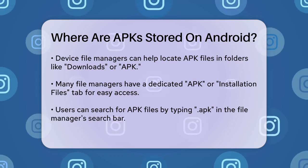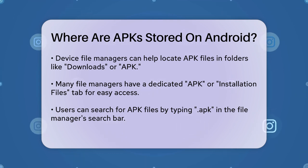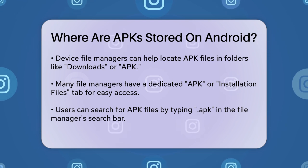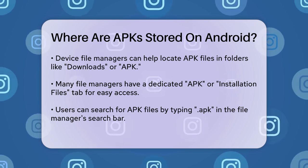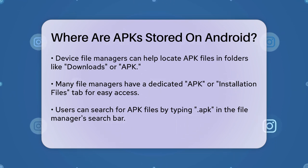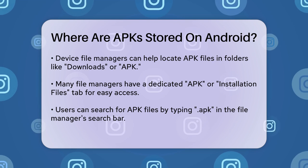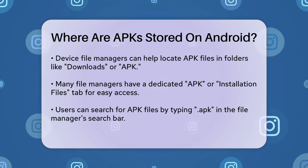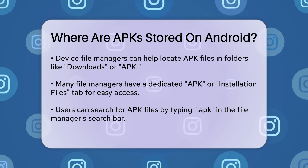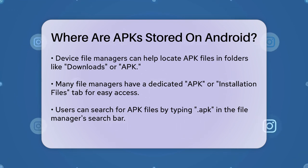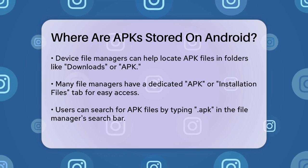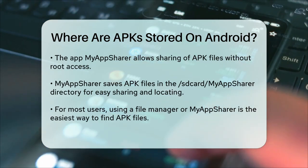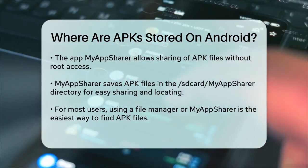You can sort these files by size, name, or date modified. If your file manager doesn't have an APK tab, you can use the search function to find APK files by typing '.APK' in the search bar. This will show you all the APK files stored on your device.